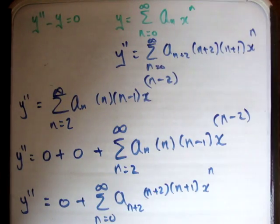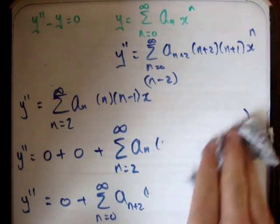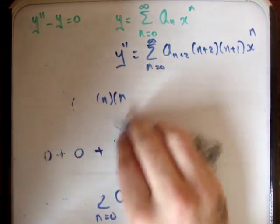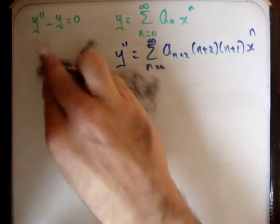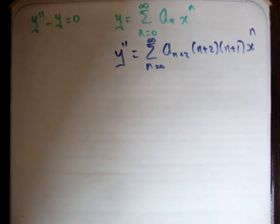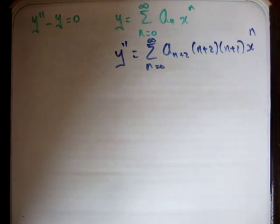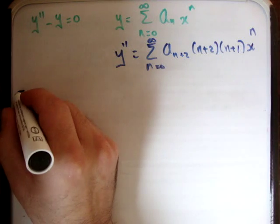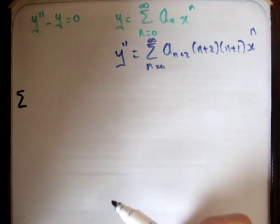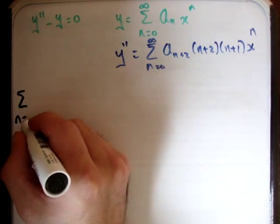You might ask why you have to go through the rigmarole of writing out bits of the power series. The reason is that this type of power series is an exception, and the rule is you'll have to write them out. Getting used to this procedure from the start means that when it comes to doing things like the method of Frobenius, you'll be much better capable to handle it. Now we need to put these into our differential equation. Both series start at n equals 0 and go to infinity, and both have power x to the n.